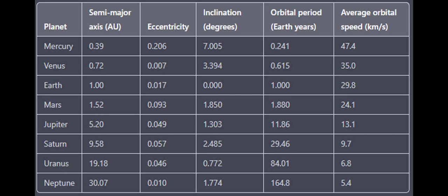Resonant orbits: some moons in our solar system have orbits that are in resonance with each other, meaning that their orbital periods are related by a simple fraction. For example, the moons Io, Europa, and Ganymede of Jupiter are in a 1:2:4 orbital resonance,